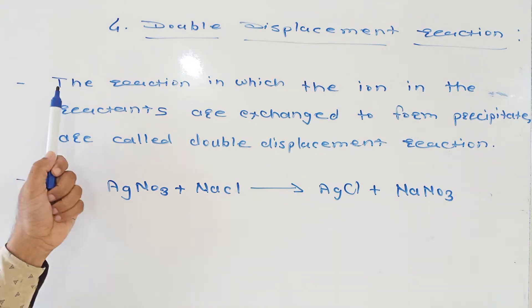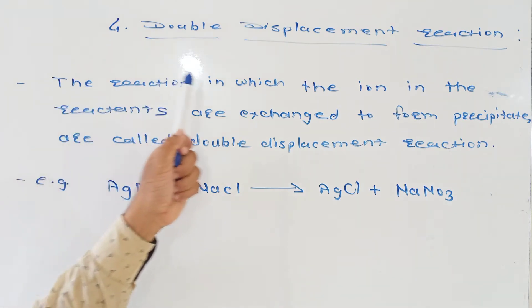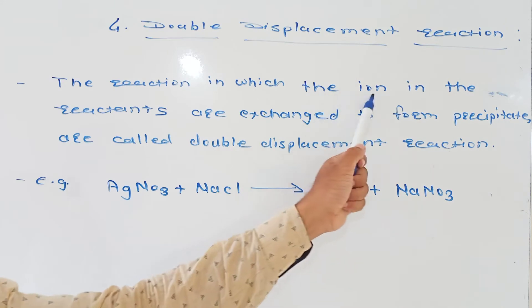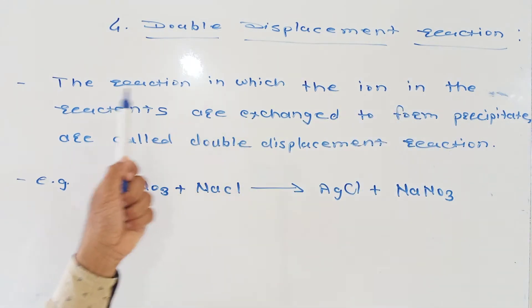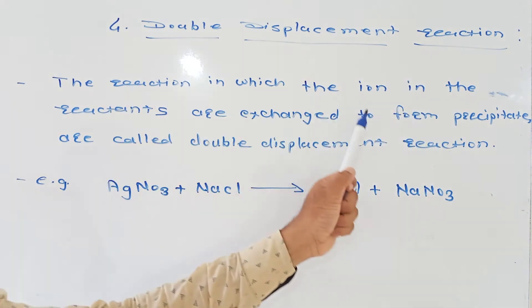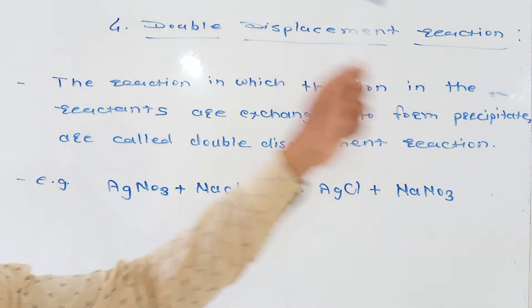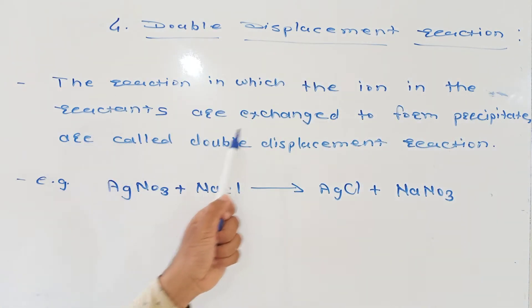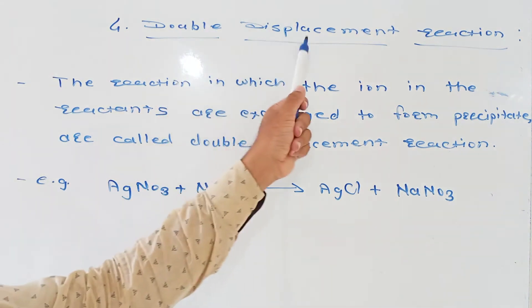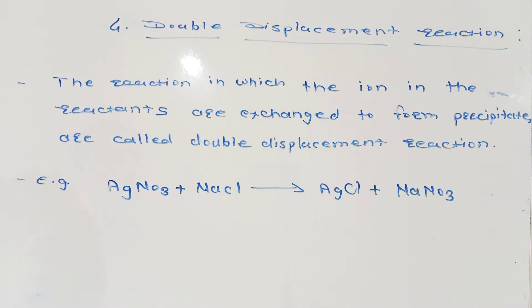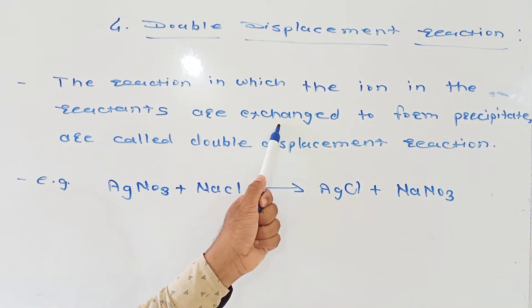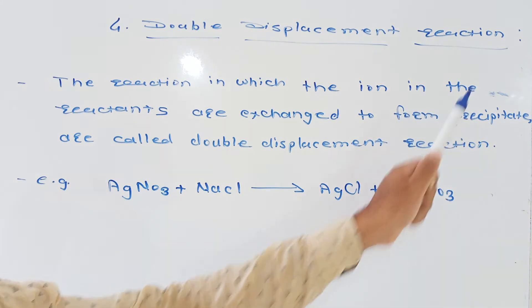First of all, its definition. The reaction in which the ions in the reactants are exchanged to form precipitate are called double displacement reaction.